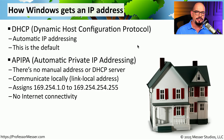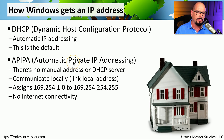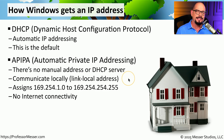If a DHCP server is not available and a manual or static IP address has not been configured on a workstation, then your machine will decide to create its own IP address based on APIPA. This stands for Automatic Private IP Addressing. You might also hear this referred to as a link-local address, because this is a type of IP address that can only communicate on its local network.